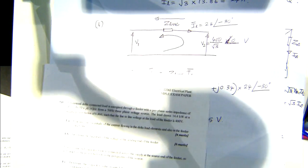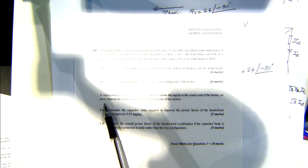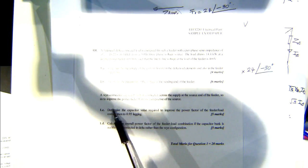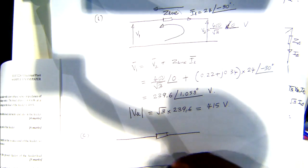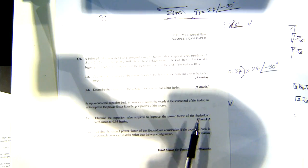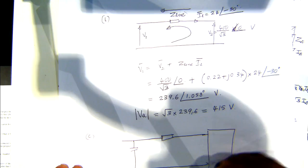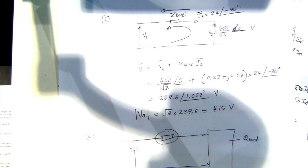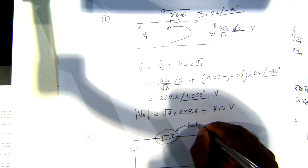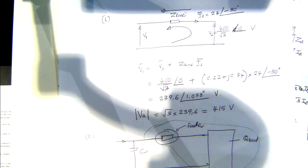For the other part of the question, a Y-connected capacitor bank is connected across the supply at the source end of the feeder to improve the power factor from the perspective of the source. That means you're connecting a capacitor here in part C. You have this impedance and you're connecting a capacitor here. Determine the capacitor value required to improve the power factor of the feeder-load combination to 0.95 lagging power factor.